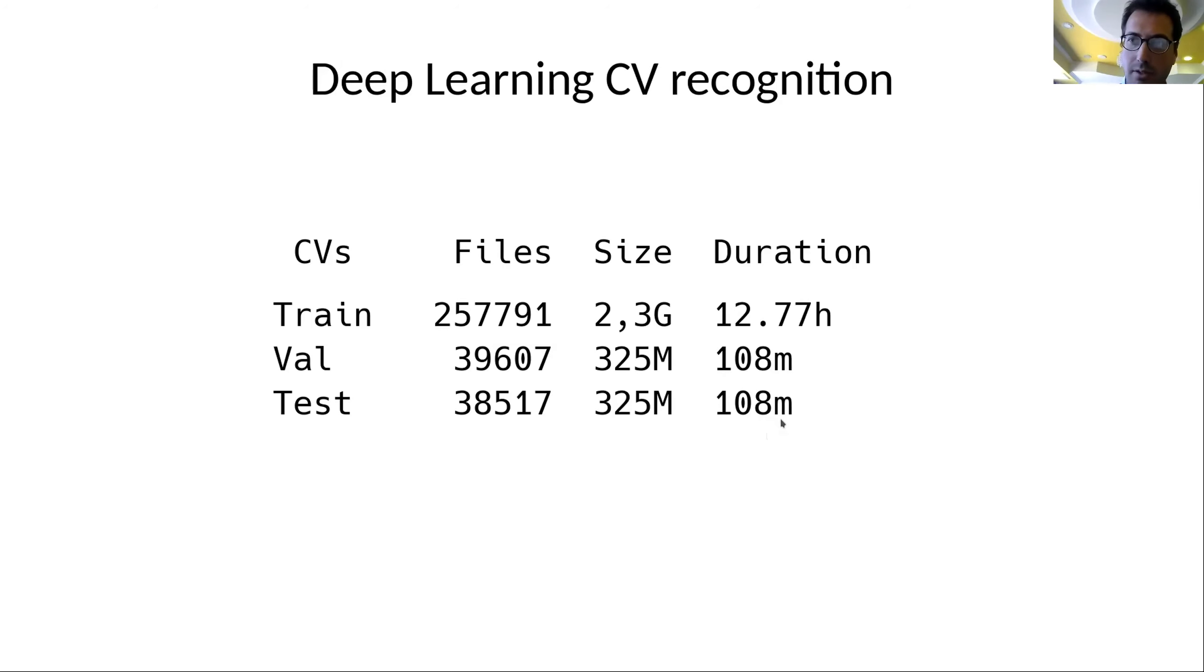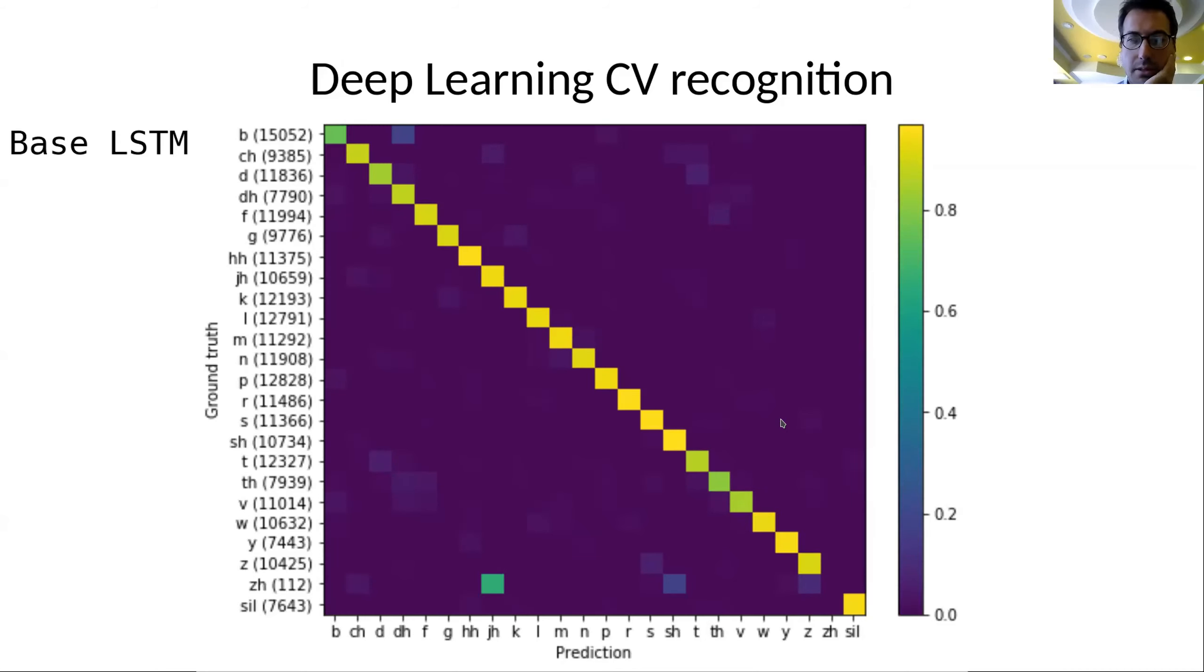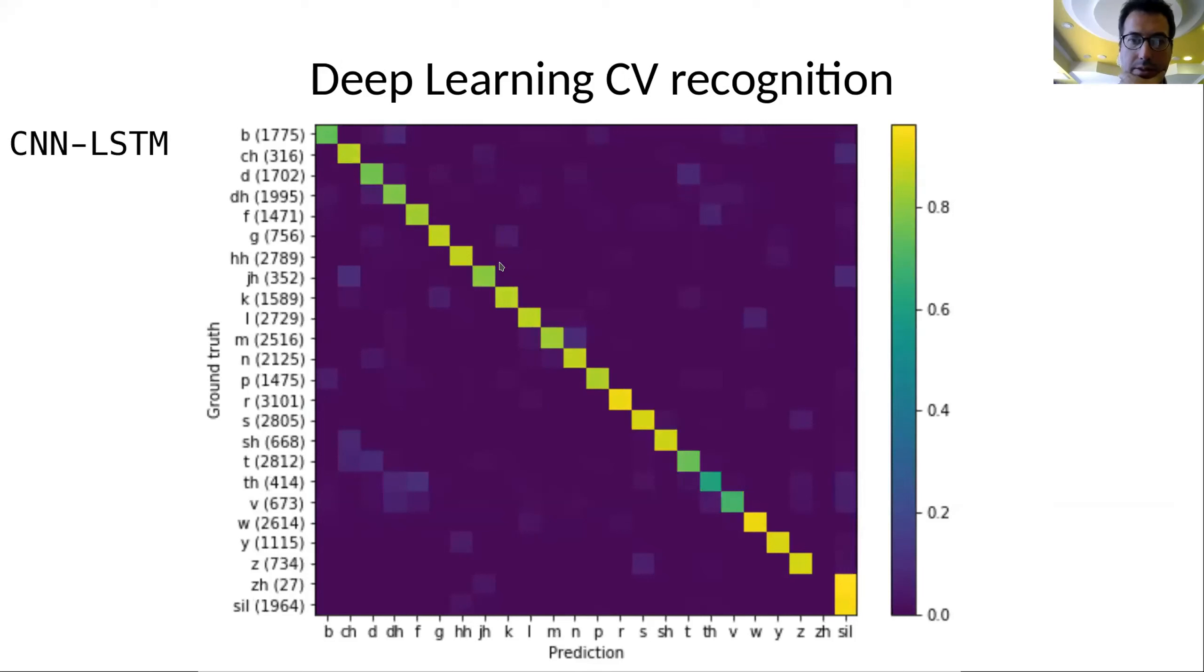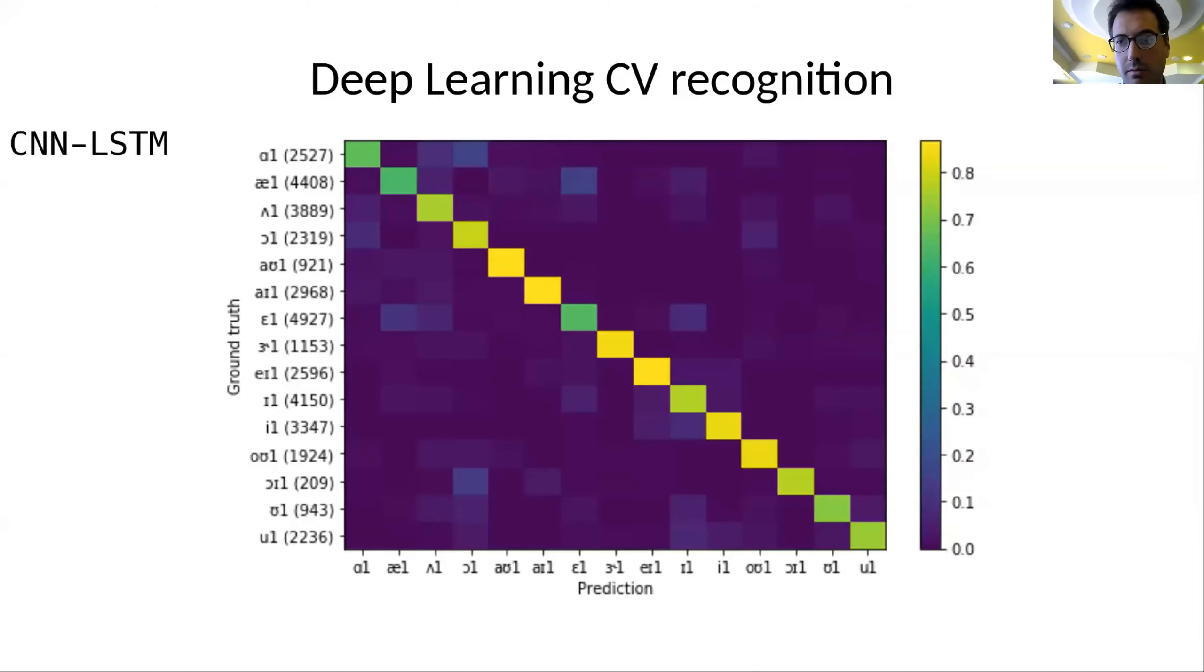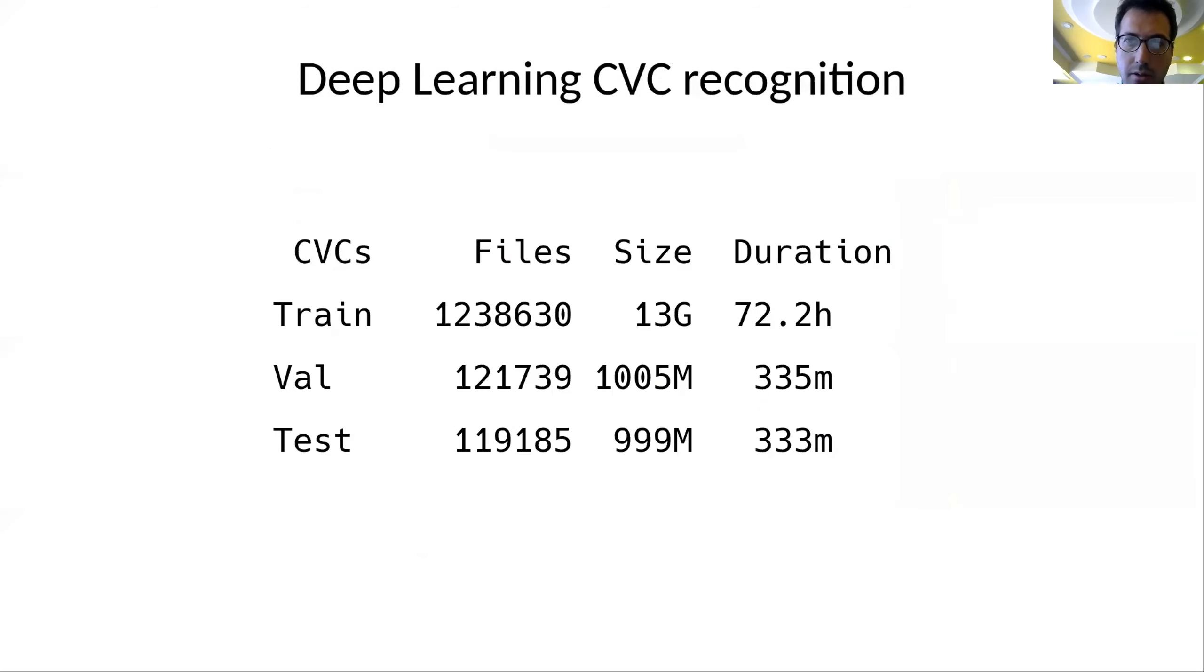For CV recognition, we had the data of 13 hours, almost two hours of validation and test data. This is the performance by the base LSTM model. It only confuses 'zh' with 'd', but the rest of the results are quite good. This is the CNN model, so the more advanced model. We see that again the 'zh' is confused, not with 'zh' now, it's confused with silence. But 'zh' was not so much in the training data, so it kind of explains the source of confusion. This was not a hindrance for us because we didn't use 'zh' as an onset, so we could successfully use these models for optimizing our learning process, optimizing our targets. For the vowels, for the base LSTM model we have a strong diagonal as well. For the CNN model we also have kind of a good diagonal.